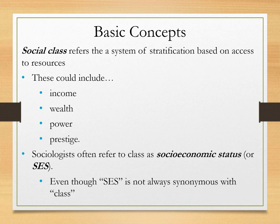Social class refers to the system of stratification based on access to resources, including income, wealth, power, and prestige. Marx focused primarily on income and wealth, while Max Weber focused on income, wealth, power, and prestige. Sociologists sometimes refer to social class as socioeconomic status, or SES. SES is not always synonymous with class, but quantitative sociologists often assert that SES is equivalent to social class, and for most cases it is.